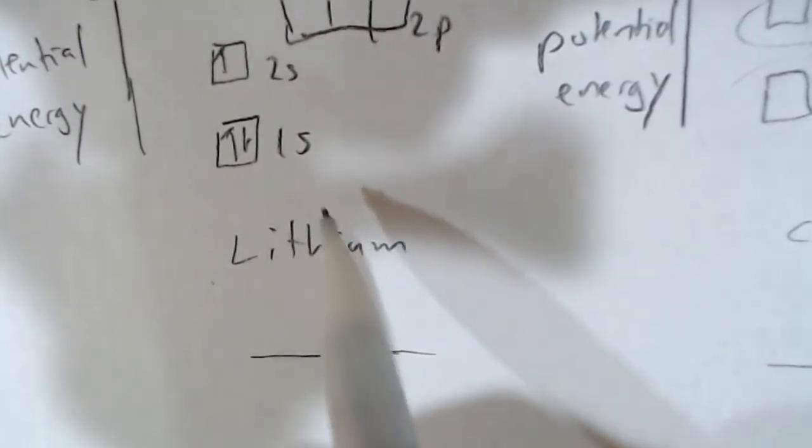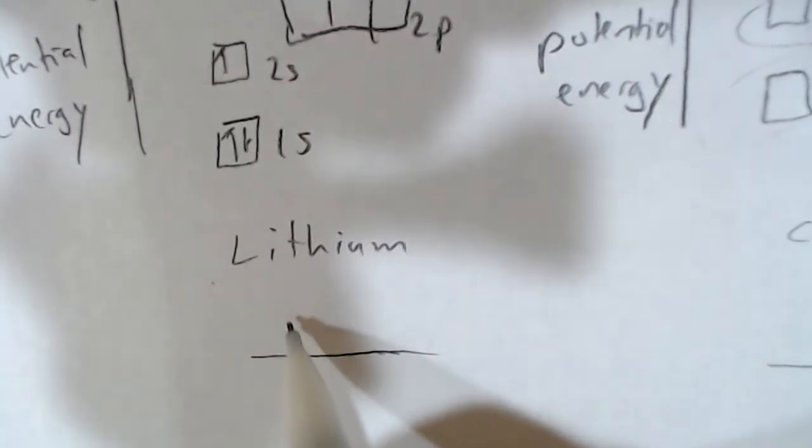To write the electron configuration, like the code for where the electrons are, we'd say there's two electrons in the 1s. So, it's 1s2. And there's also one electron in the 2s subshell, 2s1.